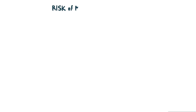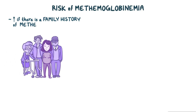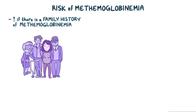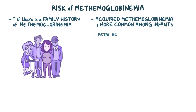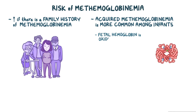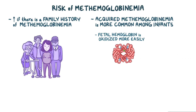The risk for methemoglobinemia increases if there's a family history of the disease. Also, acquired methemoglobinemia is more common among infants, because fetal hemoglobin is oxidized more easily, and they have lower levels of cytochrome B5 reductase.